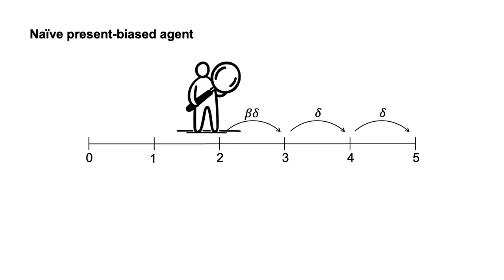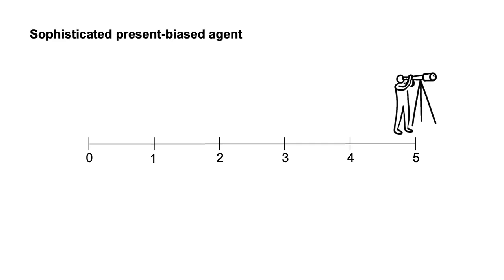They repeat this process as they move through time. In contrast, the sophisticated present biased agent makes their plans by backward reasoning, starting from the final period. For that final period, they solve for the preferred action.